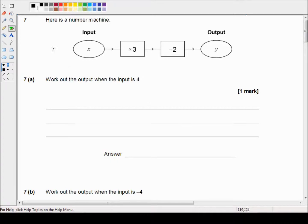We're picking up in question 7 which reads: here is a number machine. The input is x, then the machine multiplies the input by 3, subtracts 2, and gives the output of y.